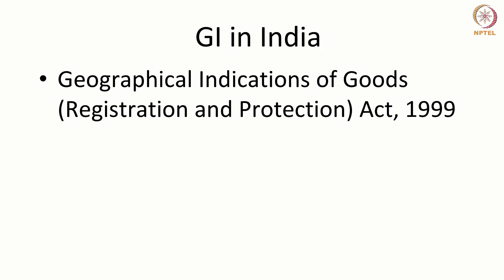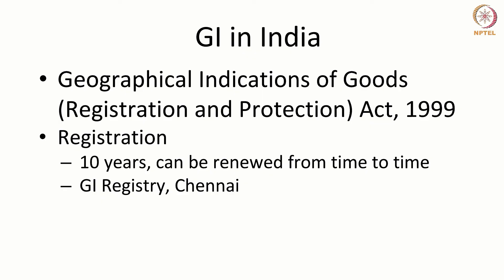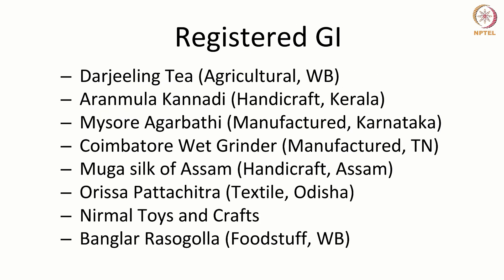GI in India is protected by the Geographical Indication of Goods (Registration and Protection) Act of 1999. Once registered, the GI enjoys a 10-year protection which can be renewed from time to time, like trademarks, and the GI registry is in Chennai.